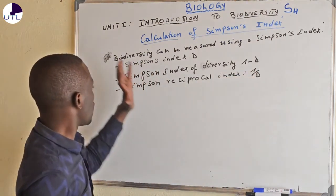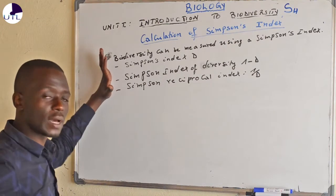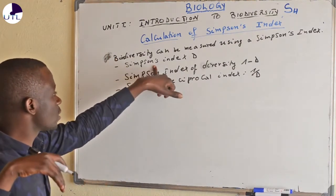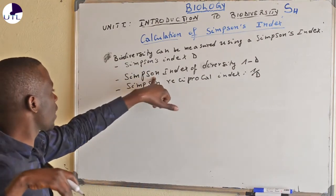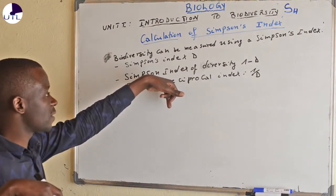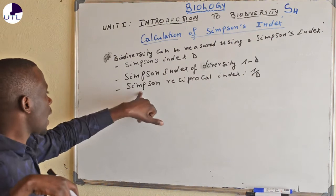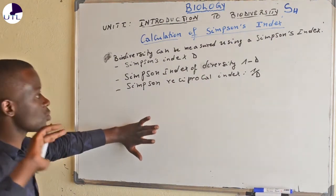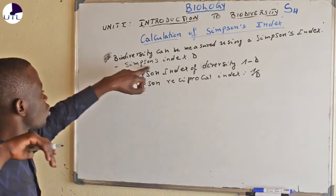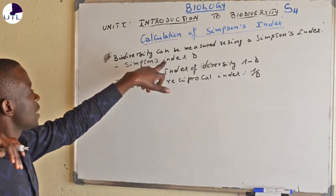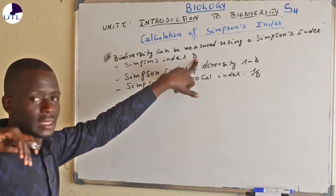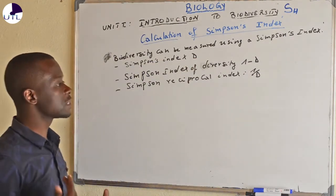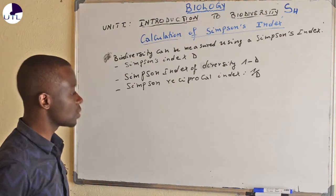Dear students, from the three indices, you can see that first of all you have to calculate the Simpson's Index D. In order to get the Simpson's Index of Diversity, which is 1 minus D, and later you can get the Simpson's Reciprocal Index which is 1 over D, but first of all you have to get the Simpson's Index D.